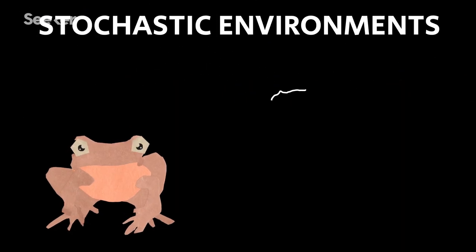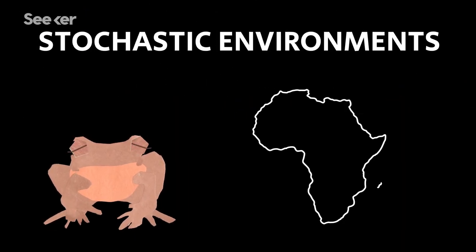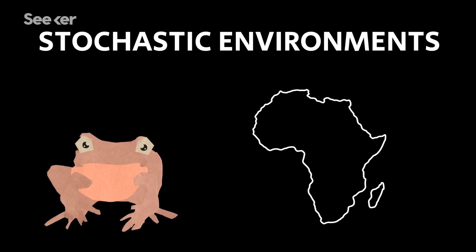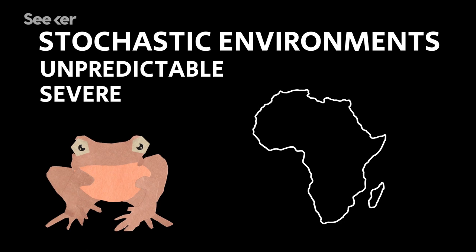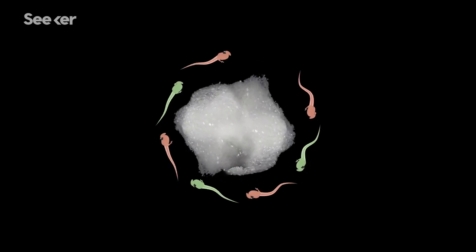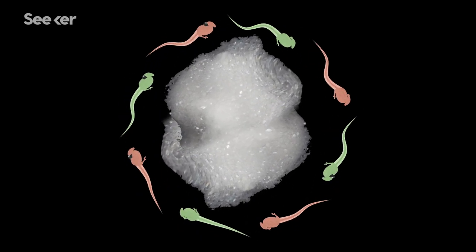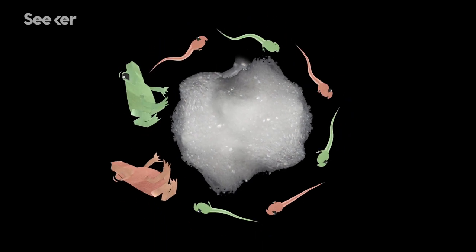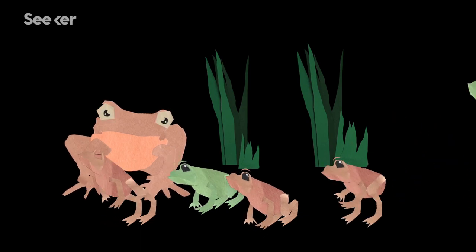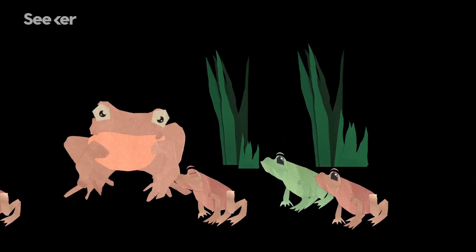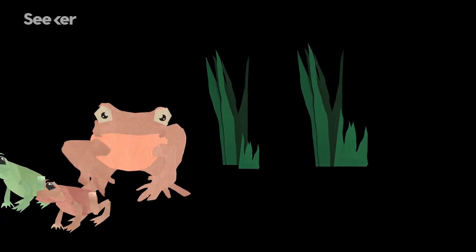Foam-nesting frogs live in stochastic southeastern African environments. This means that the environmental conditions are both unpredictable and also quite severe. By allowing each of her egg clutches to be sired by a variety of males, a female ensures that her offspring will be genetically diverse. This diversity will allow at least some of her babies to survive, regardless of the environmental conditions that they will have to endure.